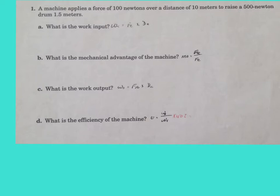Here we have our first simple machine problem. We have a machine that applies a force of 100 newtons over a distance of 10 meters to raise a 500-newton drum 1.5 meters. We have four problems to solve: identify the work input, determine the mechanical advantage, determine the work output, and determine the efficiency of the machine.